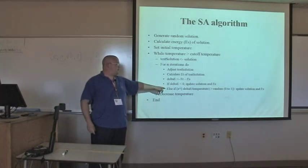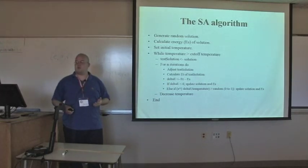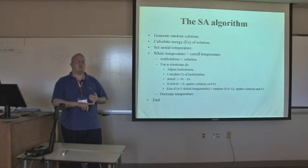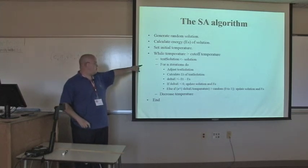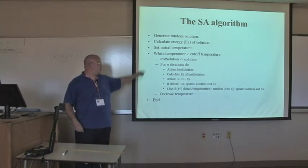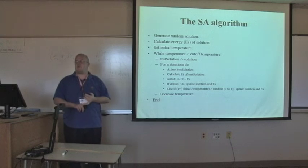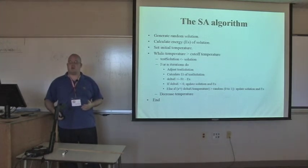If we wind up accepting it based on that, then we do the same as above, where we just update our solution with our test solution and then update the energy value for our working solution. And then we repeat this throughout our Monte Carlo cycles. And then once that's done, we drop our temperature and we keep continuing through this loop until we reach our cutoff. And then whatever we have there should be a fairly good function or a fairly good representation of a solution for the problem we're working with.